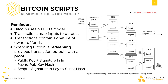So, how do you spend your Bitcoin or your UTXOs? Spending Bitcoin is the act of redeeming previous outputs with the proof that you are the legitimate redeemer. And then you can specify who can redeem the output you are now creating by encoding that person's information in your transaction.